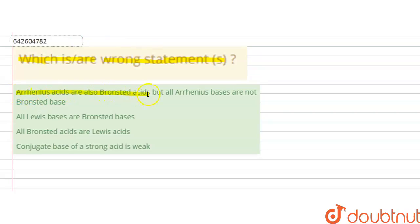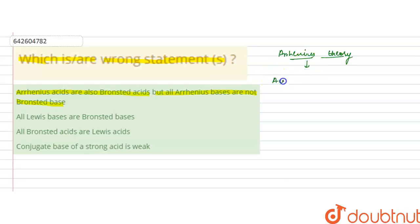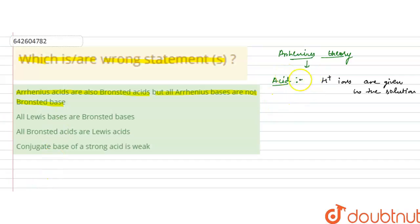The first statement is: Arrhenius acids are also Bronsted acids, but all Arrhenius bases are not Bronsted bases. According to Arrhenius theory, a species is an acid when it gives H⁺ ions in solution. A base, according to Arrhenius theory, is a species which produces hydroxide (OH⁻) ions in the aqueous solution.